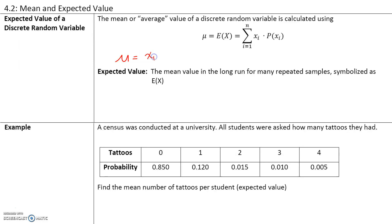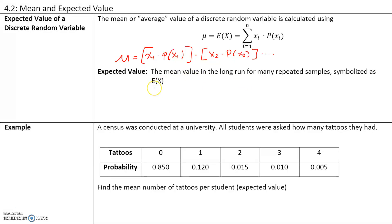Let's say our first value is x1, and the probability of that is P(x1). We would multiply this by the second value times the probability of the second value, and so on, until we have exhausted each value. The expected value, or the mean value in the long run for many repeated samples, is symbolized as E(x). The keyword here for expected value is the mean value in the long run for many repeated samples.